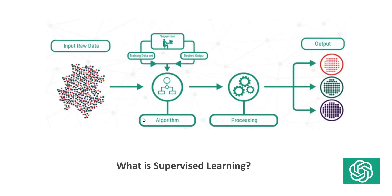Now we will see what is supervised learning. Supervised learning, also known as supervised machine learning, is a subcategory of machine learning and artificial intelligence. It is defined by its use of labeled datasets to train algorithms to classify data or predict outcomes accurately. As input data is fed into the model, it adjusts its weights until the model has been fitted appropriately, which occurs as part of the cross-validation process. Supervised learning helps organizations solve a variety of real-world problems at scale, such as classifying spam in a separate folder from your inbox.